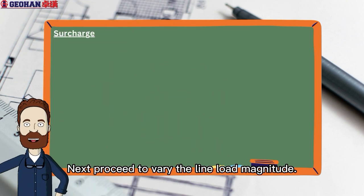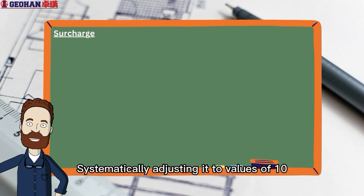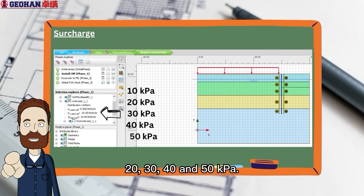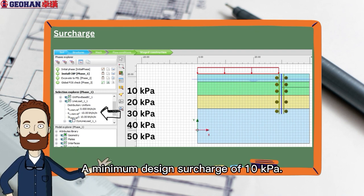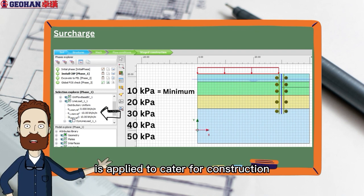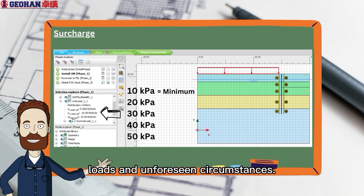Next, proceed to vary the line load magnitude, systematically adjusting it to values of 10, 20, 30, 40, and 50 kilopascal. A minimum design surcharge of 10 kilopascal is applied to cater for construction loads and unforeseen circumstances.